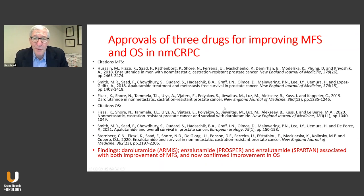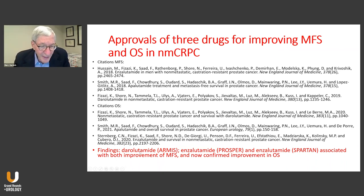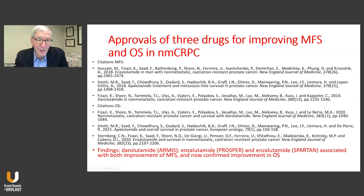There have also been approvals of three drugs for improving metastasis-free survival and overall survival in non-metastatic castration-resistant prostate cancer. Key citations from European Urology and New England Journal of Medicine indicate that darolutamide in the ARAMIS study, enzalutamide in the PROSPER study, and apalutamide in the SPARTAN study were associated with both improvement of metastasis-free survival and now confirmed improvement in overall survival — clearly practice-changing for non-metastatic castration-resistant prostate cancer.